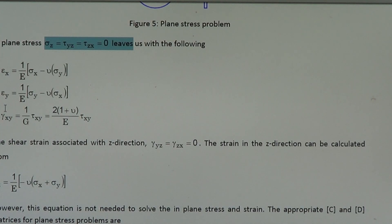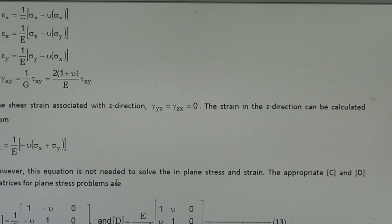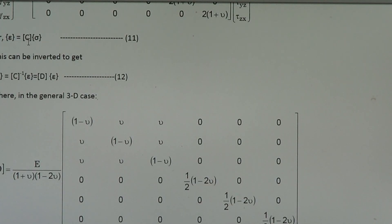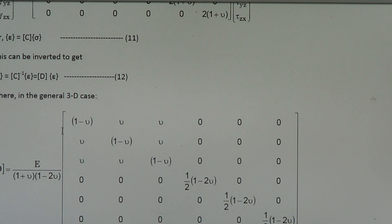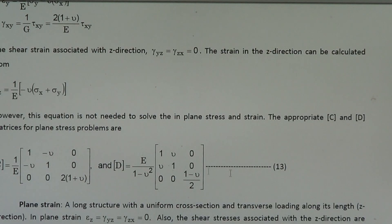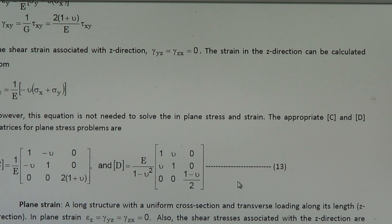If we reduce the total six stress and strain components to three, then the C and D matrices will also be reduced. Remember that C and D matrices relate stress and strain — before it was a 6x6 matrix with six components in stress and six in strain. If you reduce the number to three, C will also be reduced to a 3x3 matrix. Equation 13 gives you the values of the C and D matrices for a plane stress problem.